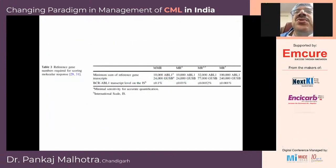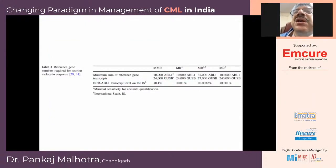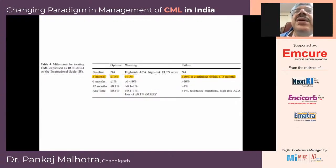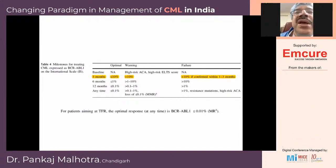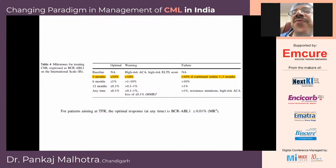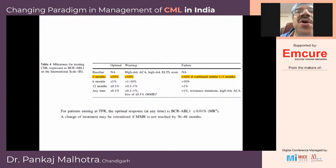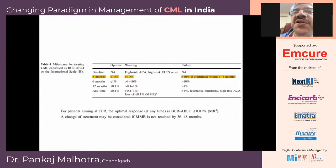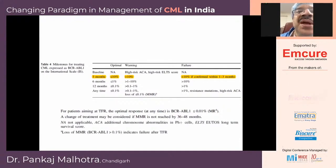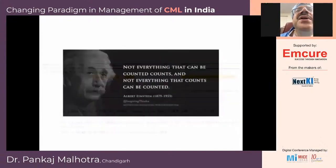The ELN 2020 guidelines use housekeeping genes ABL1 or GUSB for PCR standardization. For patients aiming at treatment-free remission (TFR), the optimal response at any time is BCR-ABL less than 0.01%, meaning a deep molecular response of MR4 or MR4.5. A change of treatment may be considered if MMR is not achieved by three to four years, and loss of MMR after complete cytogenetic response indicates failure.